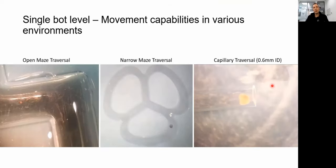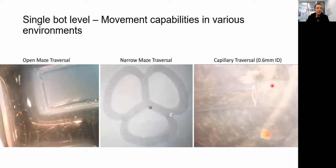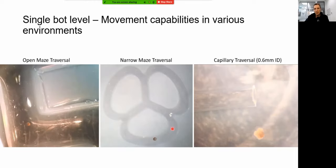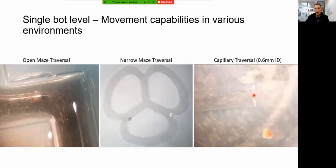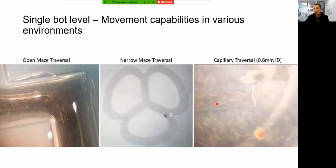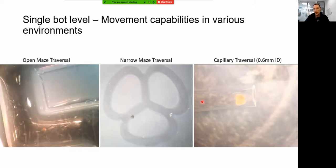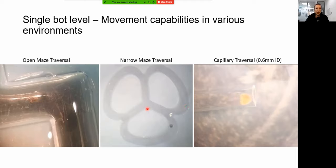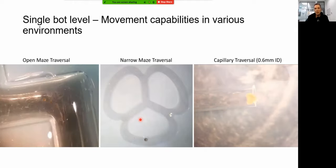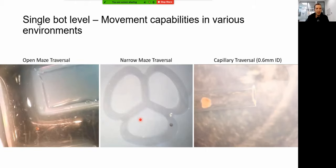At the single bot level, we're doing a lot of work looking at movement capabilities in various environments — open mazes, traversing large environments, narrow mazes, and even challenging these with a half-millimeter inner-diameter glass capillary tube. This would be a really challenging environment for a traditional robot, but we can build designs that can easily go from one end to the other. Part and parcel with this, another active part of the lab is to look at not only movement, but whether we can have different types of stimuli around mazes and have the robots either record information about what they sense or perhaps do something when they sense the stimuli.